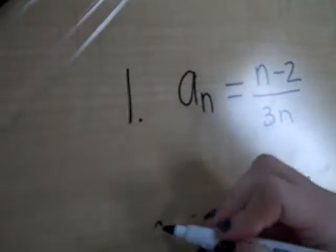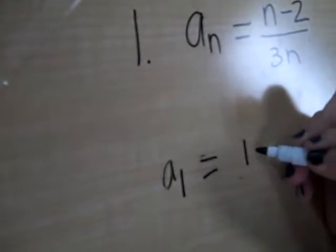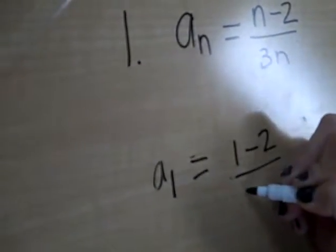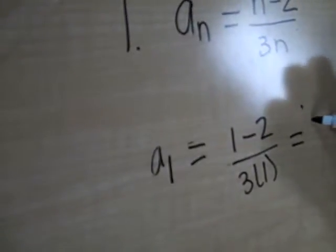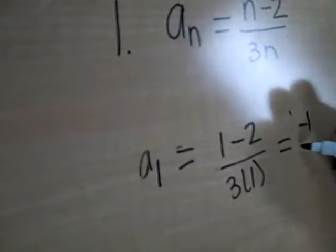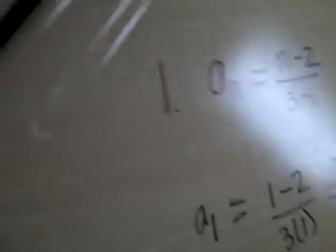This is problem number 1. To find a sub 1, you plug 1 in for n. It would be 1 minus 2, and then 3 times 1. So 1 minus 2 is negative 1, and 3 times 1 is 3. So the answer for a sub 1 is negative one-third.